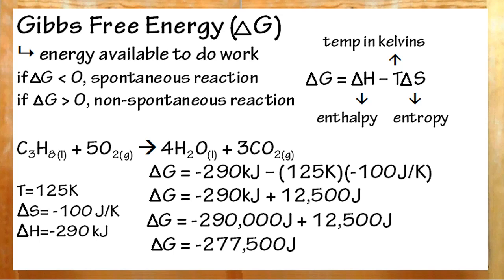Most chemistry teachers like delta G in joules, so you might want to convert to that. After that, just check the sign, positive or negative, spontaneous or not, and you're done.